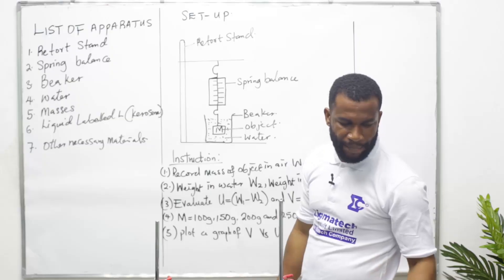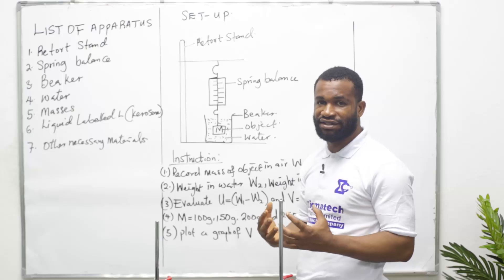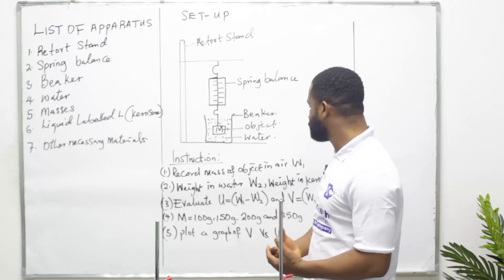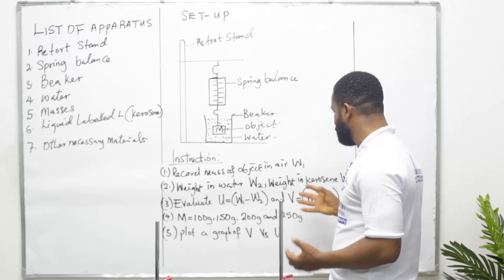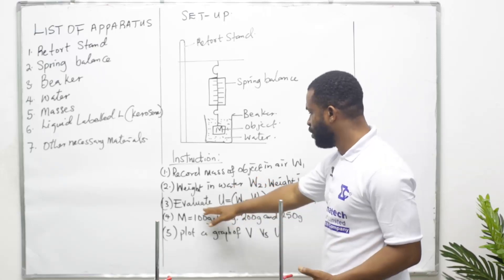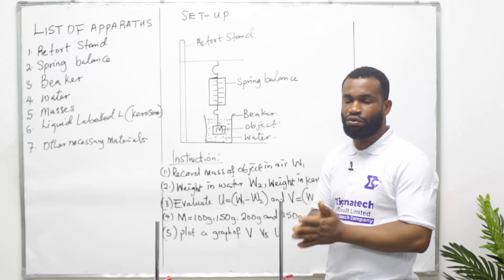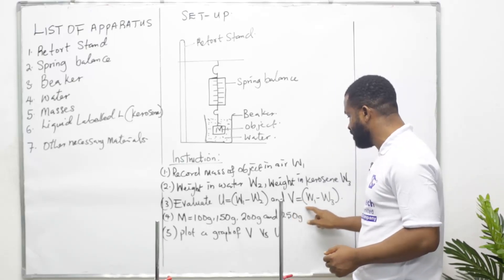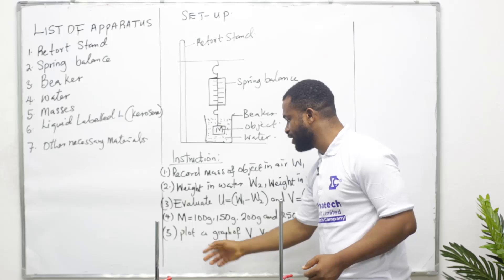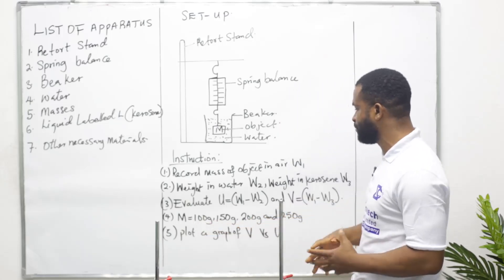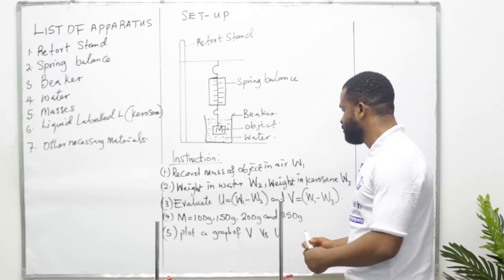It said record the mass of object in air, so you first record the mass of the object in air using your spring balance. Then the weight in water - when you put it in water there will be a buoyancy or sometimes we call it uptrust, so that uptrust is recorded as mass in air minus mass in water. Also weight in kerosene. You evaluate the uptrust in water as W1 minus W2, and uptrust in kerosene as W1 minus W3. After this we repeat the experiment with different masses: 150, 200, and 250.